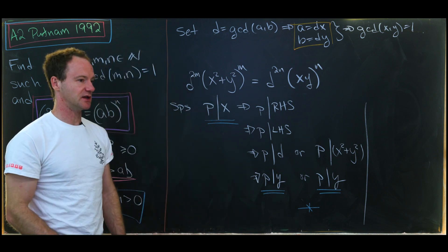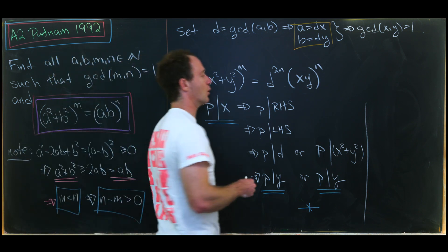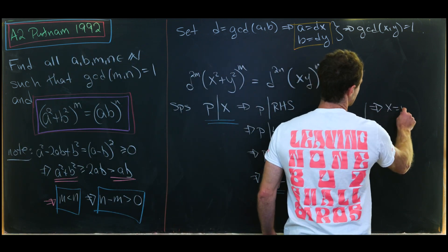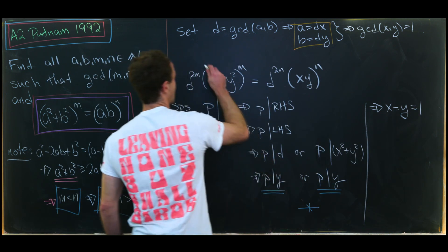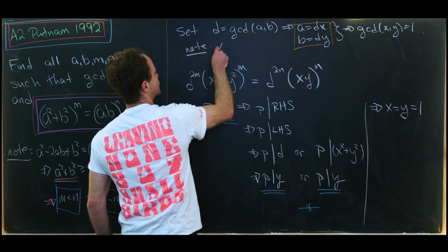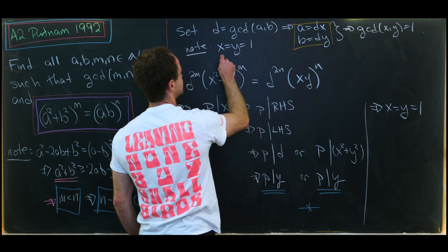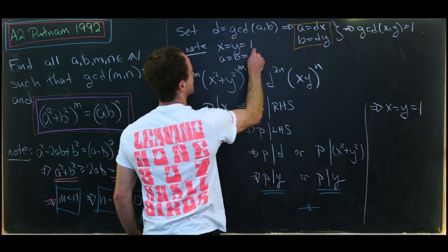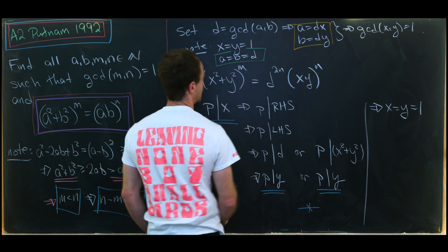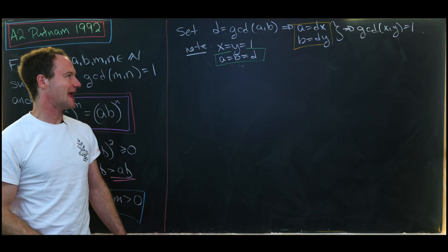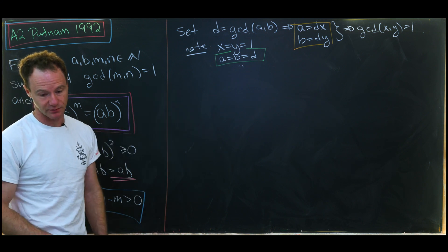By symmetry, the same argument applies to any prime dividing y. So there is no prime dividing x or y, meaning x and y must both equal 1 — since a natural number with no prime divisors is just 1. This tells us that A equals B equals d, i.e., A and B are the same number and equal to their GCD.